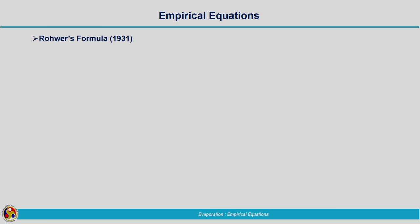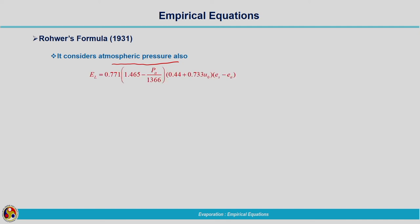The second empirical formula is Rohr's Formula, which is similar to Meyer's equation but also incorporates atmospheric pressure. The expression is: El = 0.771 × (1.465 − P × Ea/1366) × (0.44 + 0.733 × u₀) × (Es − Ea). This is a slightly lengthy expression, but it has been modified and taken into this standard form. The key addition here is that atmospheric pressure is taken into account.